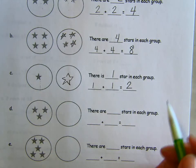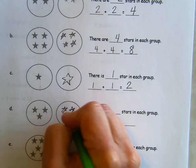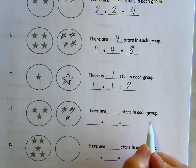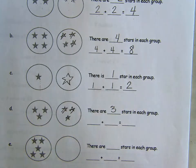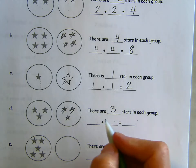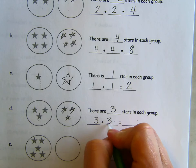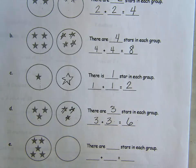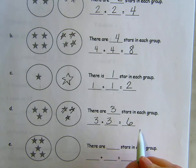Three stars. One, two, three. There are how many stars in each group? Three. So our doubles fact is three plus three is six. If I take three and I double it, I get six.